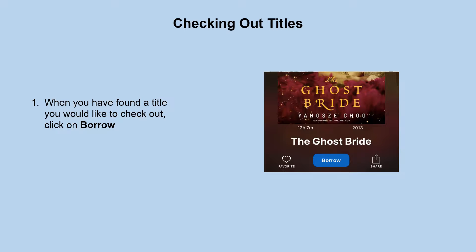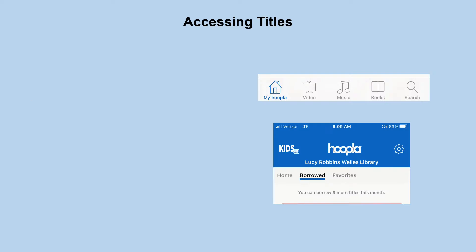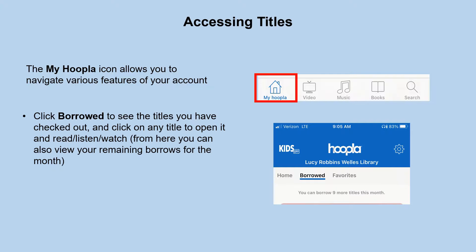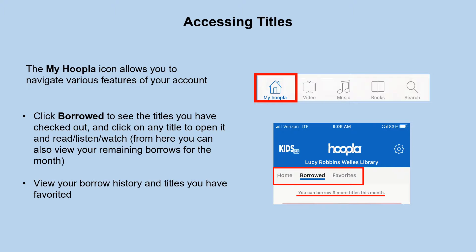When you have found a title you would like to check out, click the Borrow button, and that will change to give you the option to Play or Read the title. The My Hoopla icon at the bottom bar allows you to navigate various features of your account, the same way the browser has it at the top of the screen. You can click on Borrowed to see currently checked out titles, view how many borrows you have remaining for the month, view your borrow history, and click on titles you have favorited.